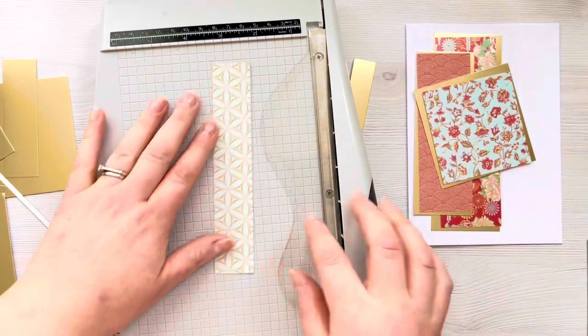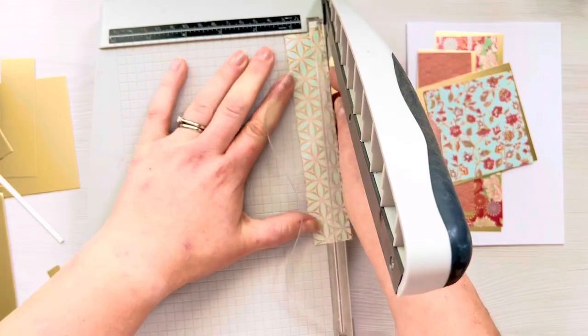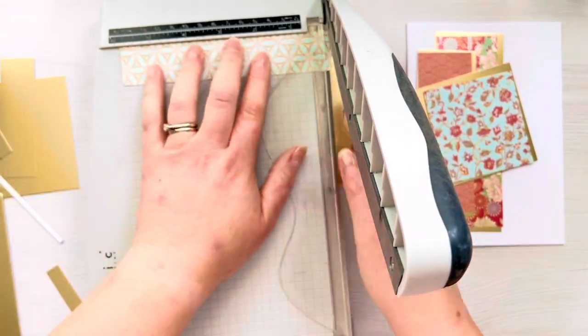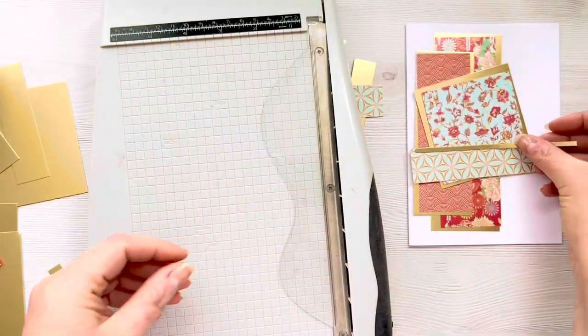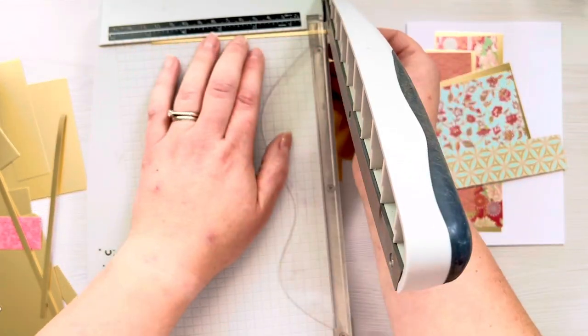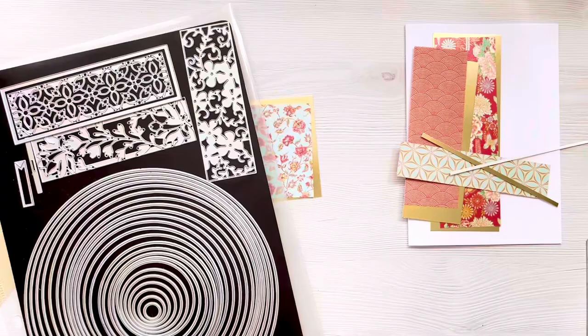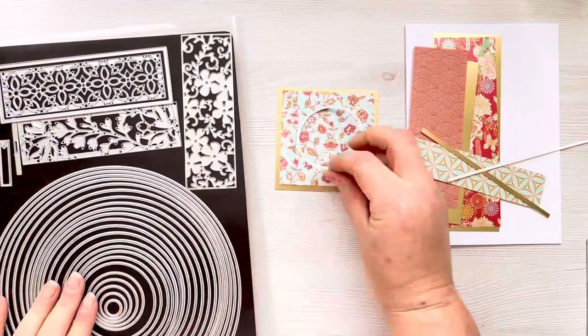For the strip or the band that's going to go behind, I've got this piece of patterned paper that already measures about an inch so I'm just trimming that down to 5 inches wide, and then two gold strips that are already quite thin so I'm trimming those down to 5 inches wide as well.